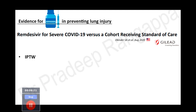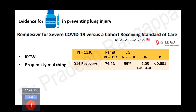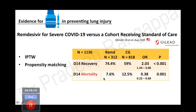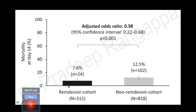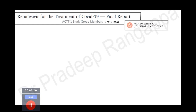A study by Gilead in August 2020 used an inverse propensity test weighted design with propensity matching in a large group of patients. They had 1,130 patients — 312 in the remdesivir group and 818 in the control group. Day 14 recovery was significantly better in remdesivir at 74.4% versus 59%, and day 14 mortality was significantly less in the remdesivir group. The graphical representation shows increased improvement and lower death rates in the remdesivir group compared to non-remdesivir.